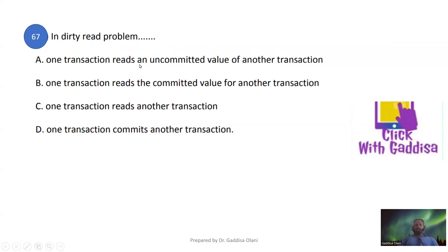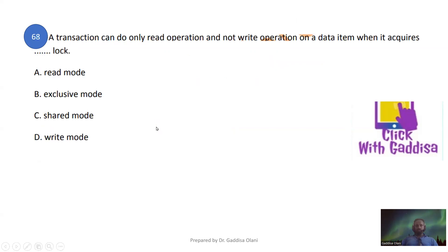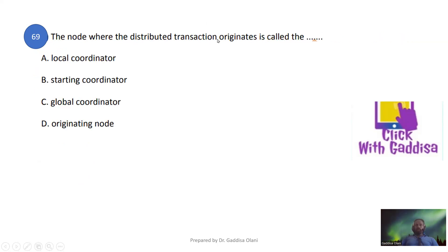One transaction reads a committed value written by another transaction — this is a read-committed scenario. If a transaction can do only a read operation and not a write operation, it acquires a shared mode lock. The node where the distributed transaction originates is called the global coordinator.